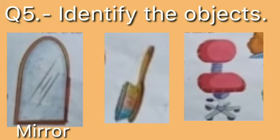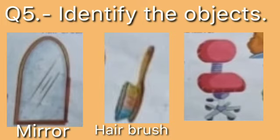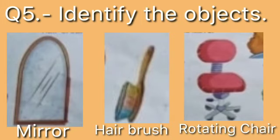Now identify the objects. The first picture is mirror — M-I-R-R-O-R, mirror. The second picture is hair brush — H-A-I-R B-R-U-S-H, hair brush. And the next picture is a rotating chair. Children, learn all these from your GA book. The chapter name is 'At the Hairdresser.'